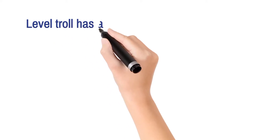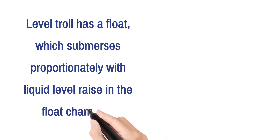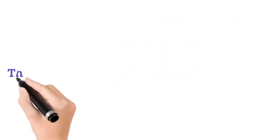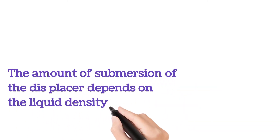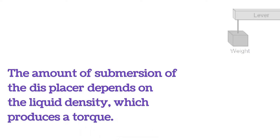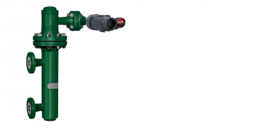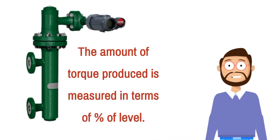Level troll has a float. This float submerges in the float chamber proportionally with the rise in liquid level. The amount of submersion of the displacer depends on the liquid density. Torque is produced due to sinking, and the amount of torque produced is measured in terms of percentage of level.